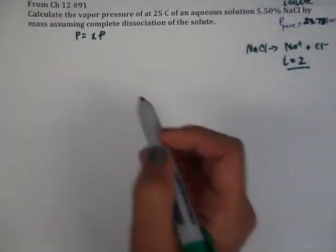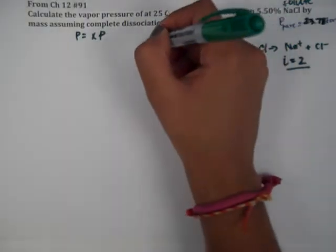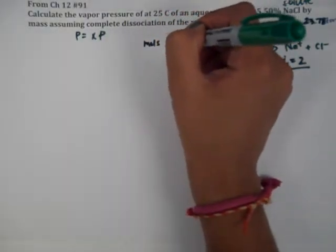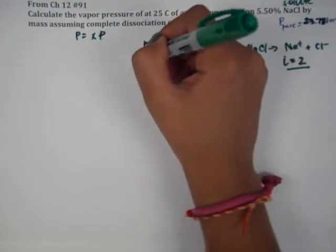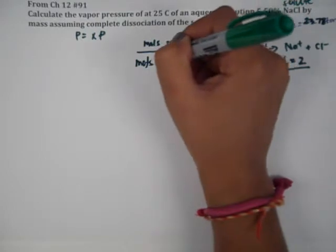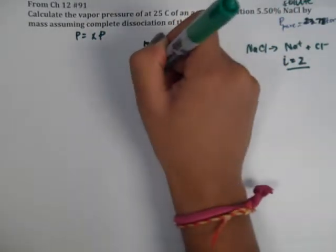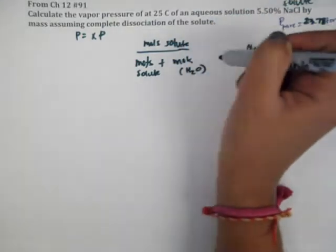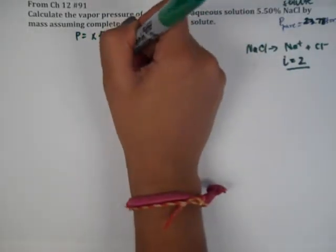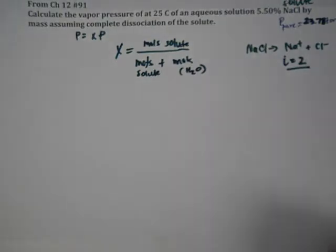So, to find X, which is mole fraction, right? It's going to be moles of solute over total moles, which is moles of solute plus moles of solvent, which is water. That's going to be our mole fraction for solute.